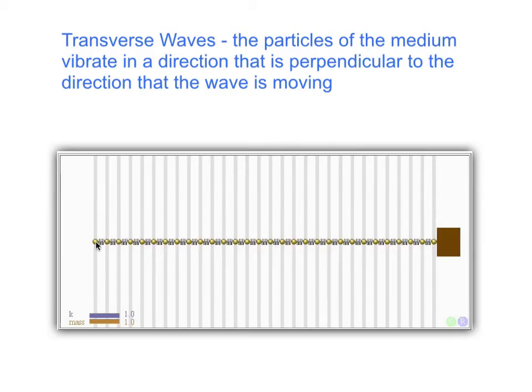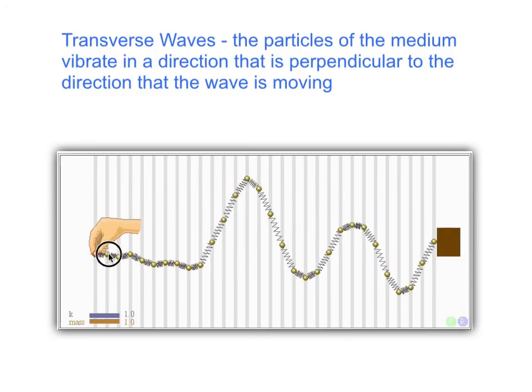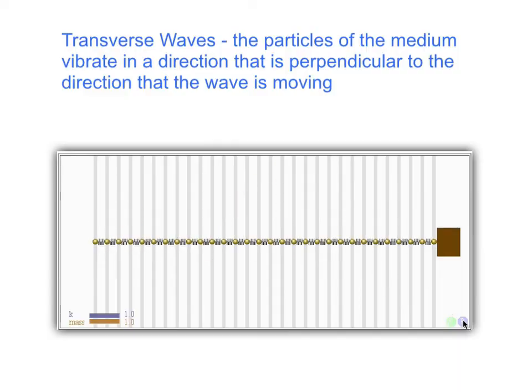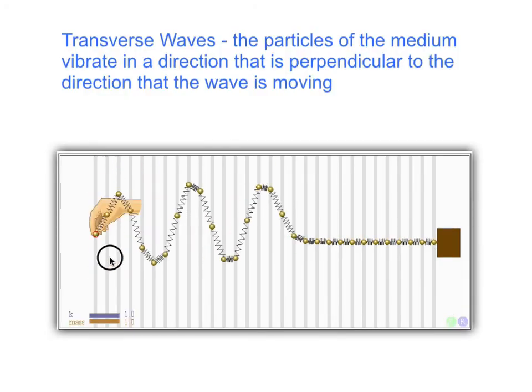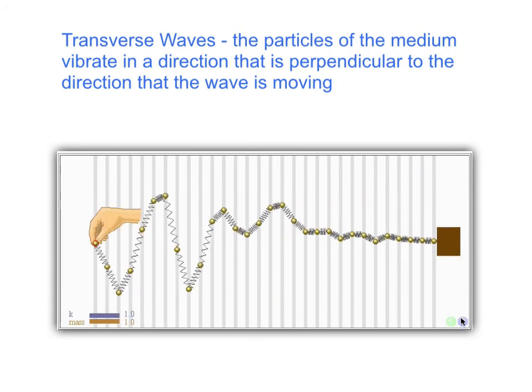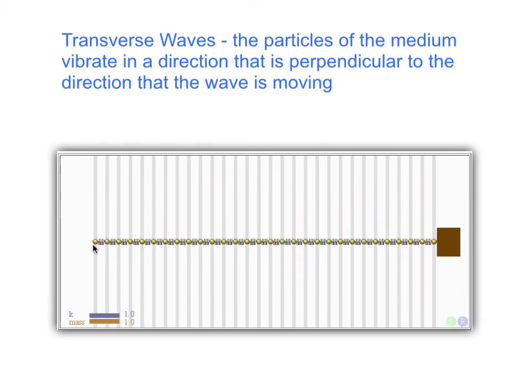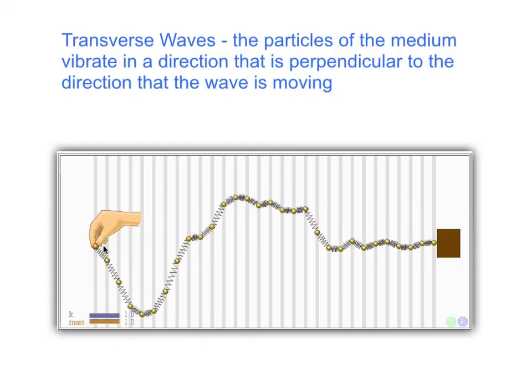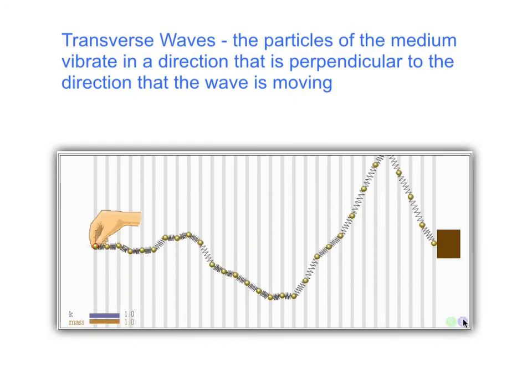The second type of wave is called a transverse wave. In this kind of wave, the particles of the medium, the gold masses, vibrate in a direction that's perpendicular to the direction that the wave is moving. So if the waves here are going from left to right or right to left, notice that the masses actually go up and down. So the particles of the medium vibrate in a direction that is perpendicular to the way that the waves are going.